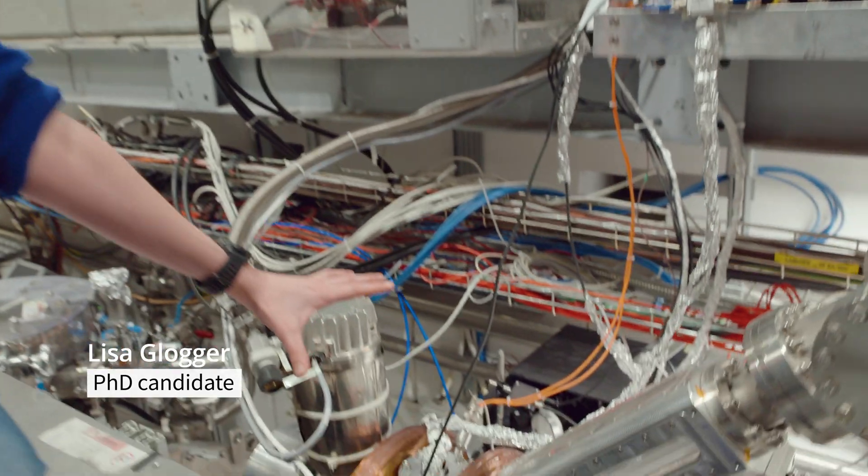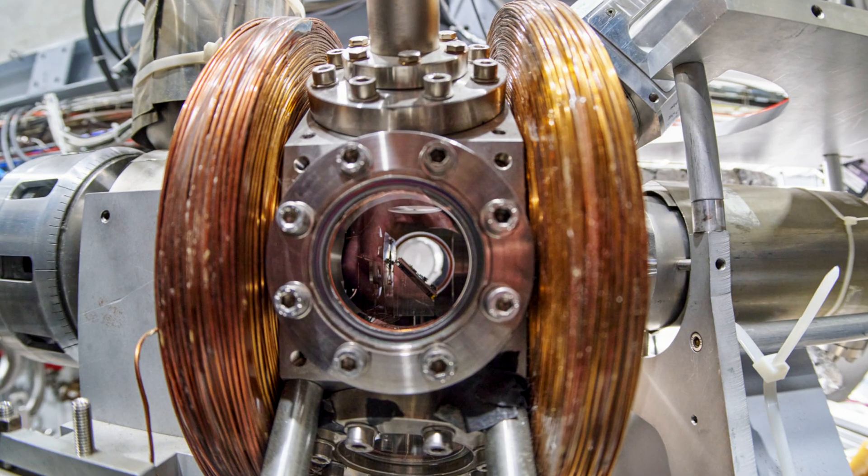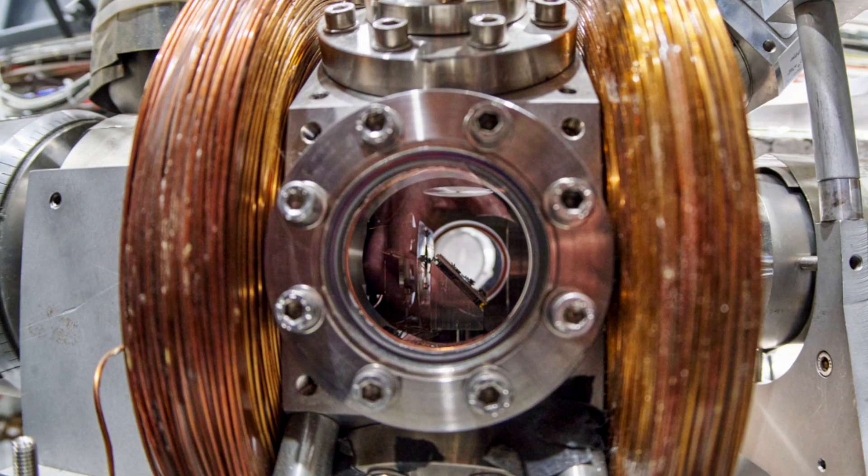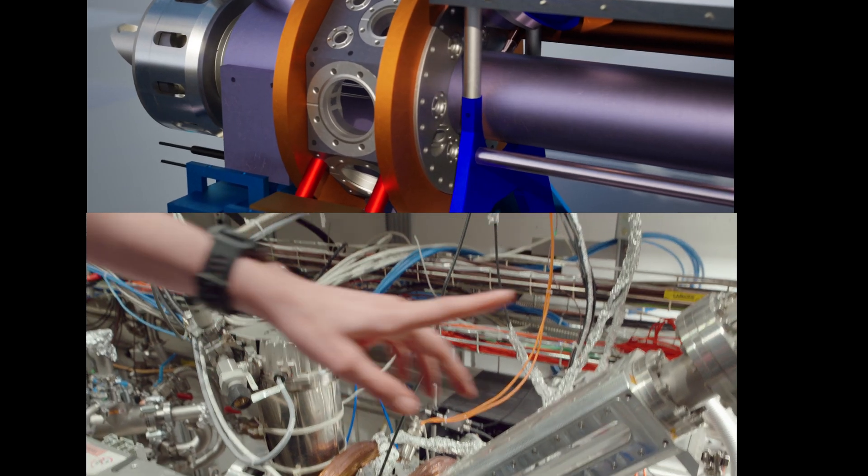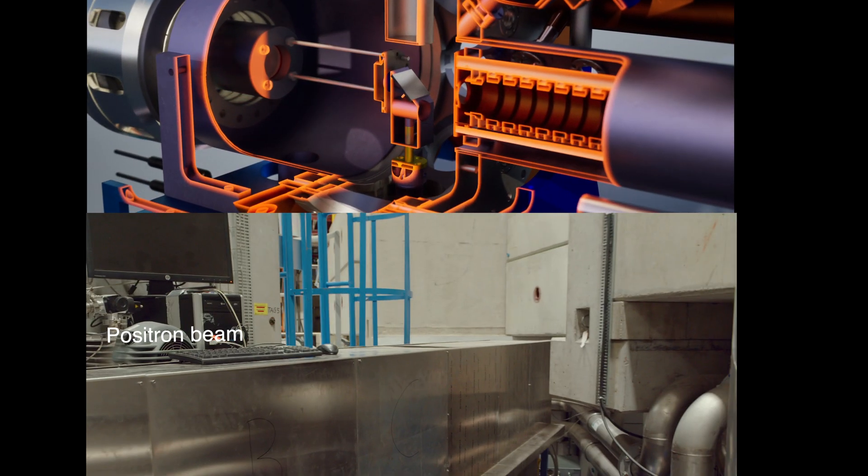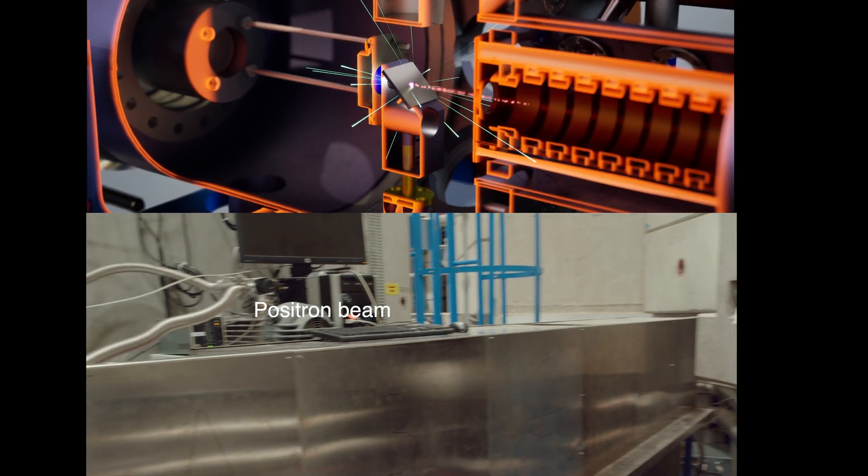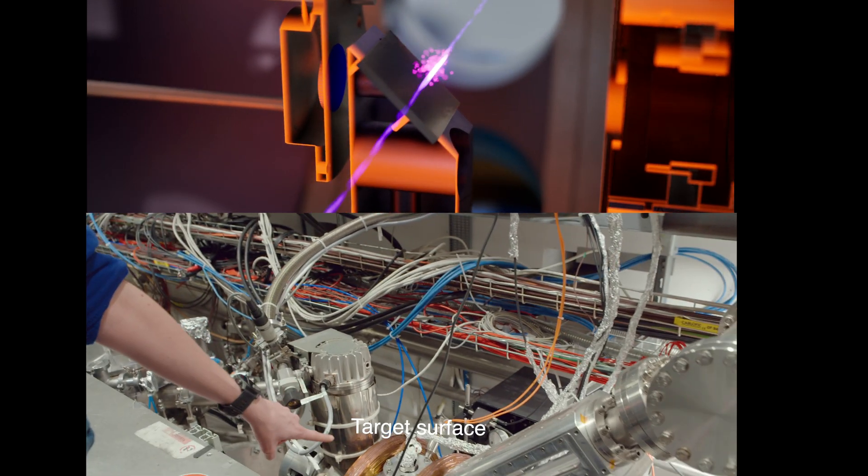This is our production chamber. Inside this chamber, we have a positron-positronium converter target. And from this side, we have a pulsed positron beam that is being implanted into the target surface.